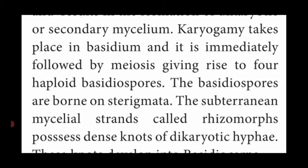The diploid dikaryotic mycelium contains 2N number of nuclei by the fusion of two nuclei of the body cells. That process is called karyogamy — 'karyo' means nucleus, 'gamy' means fusion of two different nuclei. Followed by meiotic cell division, haploid basidiospores are produced. These basidiospores are produced on a club-shaped structure called sterigma.